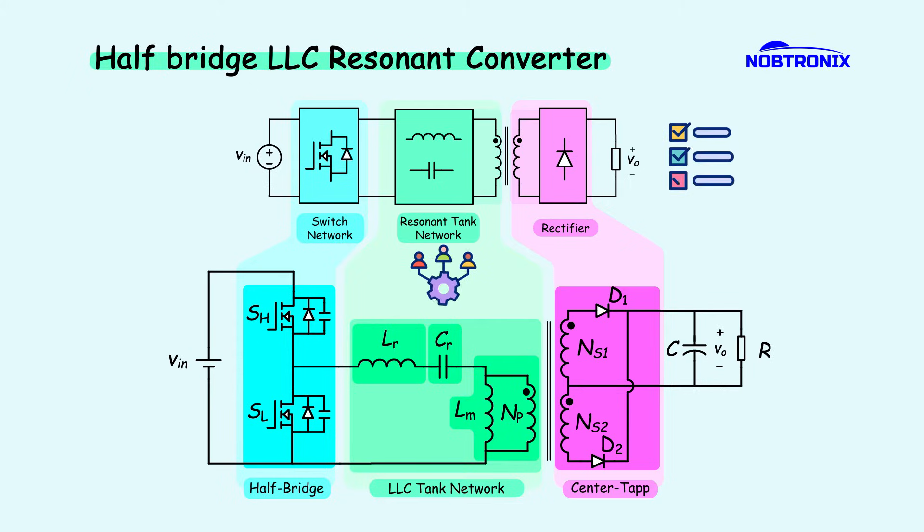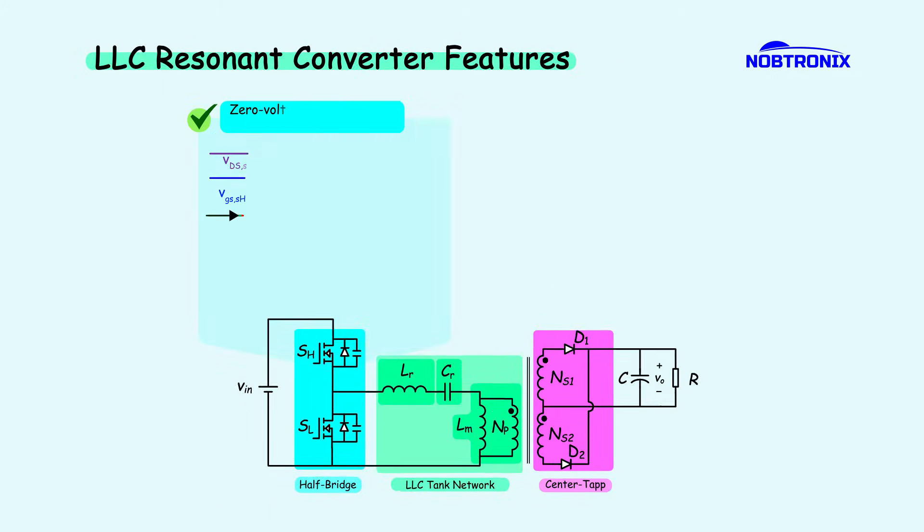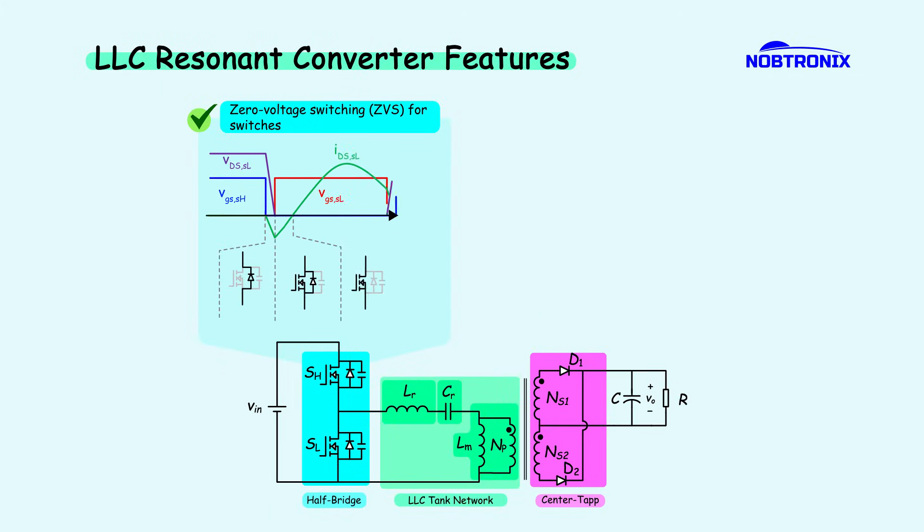Now, what features does this topology have that make it suitable for use in power supplies? One of the most important advantages of a resonant converter is soft-switching, which allows switching devices to turn on and off with minimal voltage or current stress. This greatly reduces switching losses, improves thermal performance, and enhances overall efficiency.